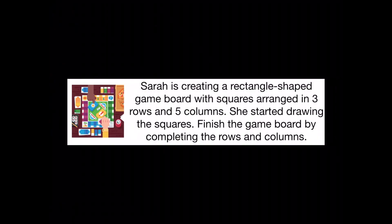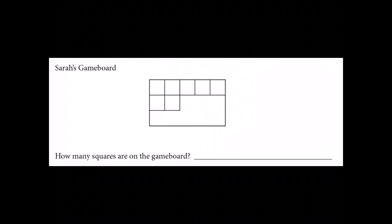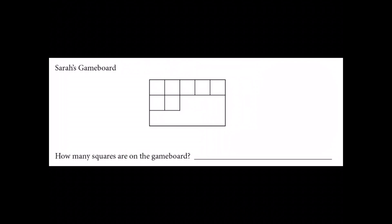Sarah is creating a rectangle-shaped game board with squares arranged in three rows and five columns. She started drawing the squares — finish the game board by completing the rows and columns. You can pause the video to create a similar game board. There would be 15 squares on the game board when Sarah finishes, as there would be three rows of five: five, ten, fifteen.